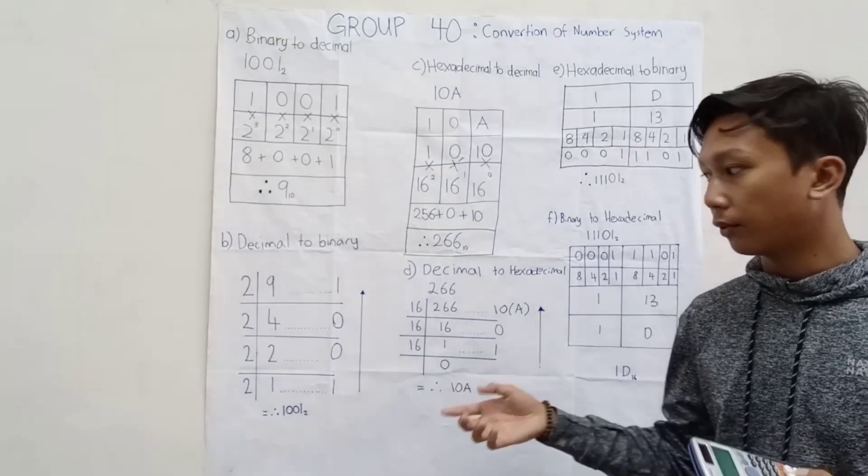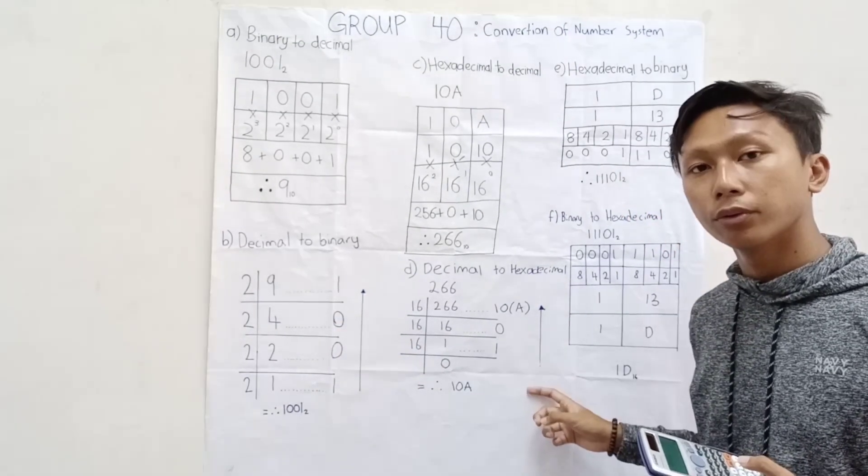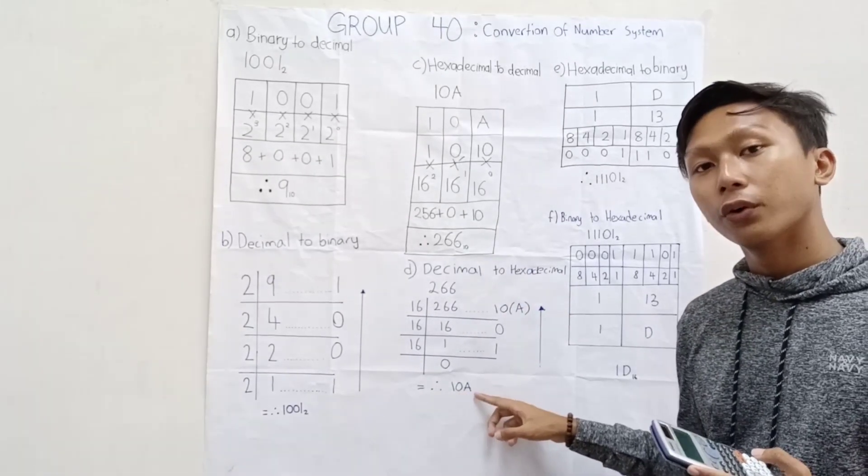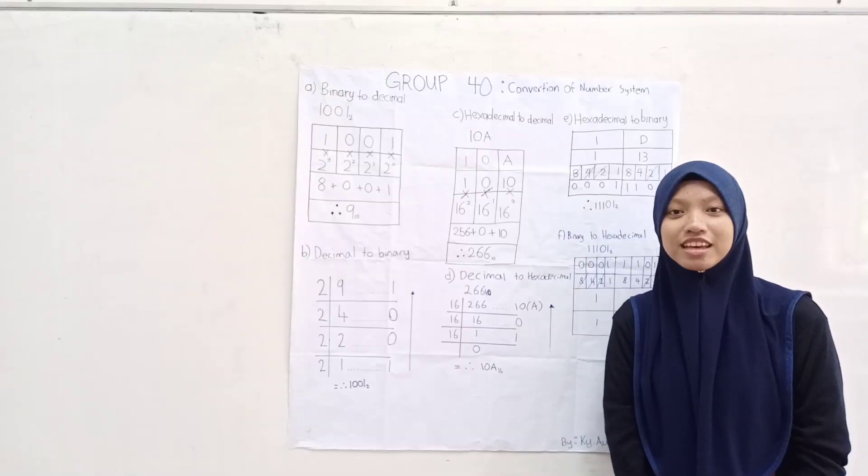Now, as from the decimal to binary, we go from below to top, we will get 10A. That's all.